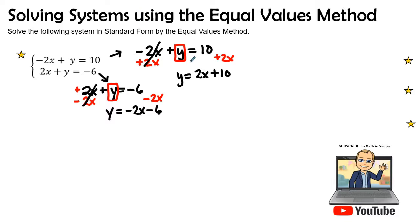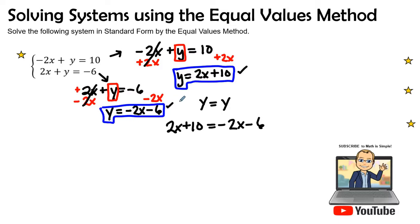So both equations. Here's my first equation, and here is my second equation. So in this step, I changed the equations from standard form into y equals mx plus b form, so I can solve by equal values method. So remember we talked about in previous videos that equal values method is when I set y equal to y. Therefore, I'm going to put 2x plus 10 equal to a negative 2x minus 6.